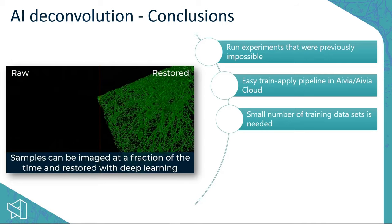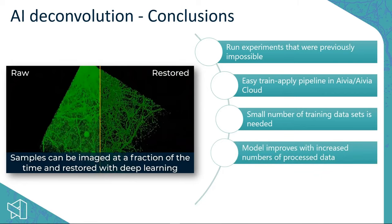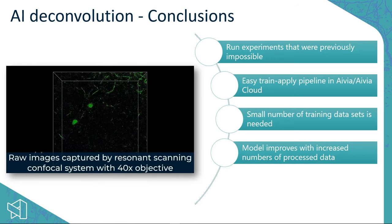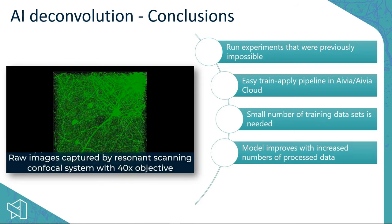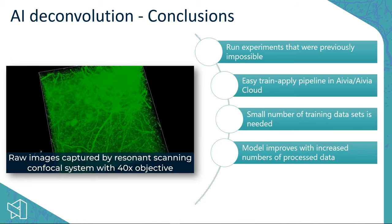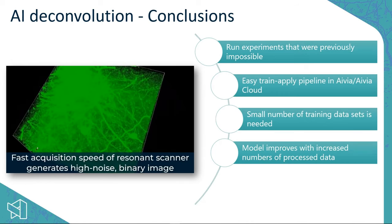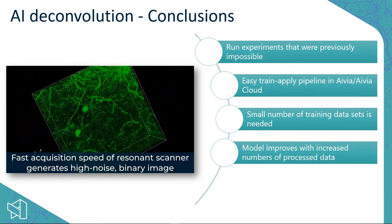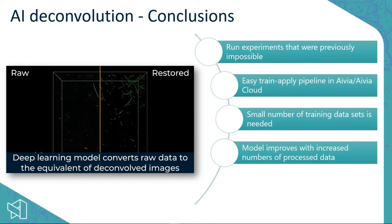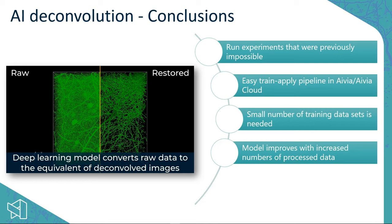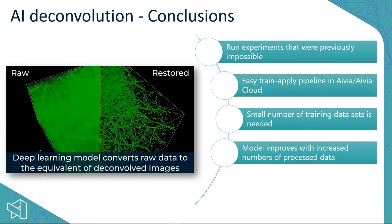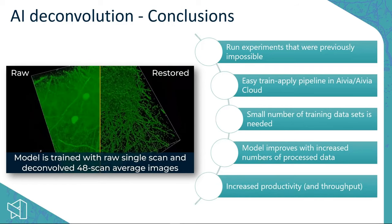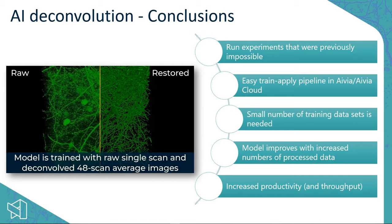Once you have a trained model, you can apply it using a single GPU, very quickly. Importantly, this model can be continuously upgraded with additional training data, so you can gradually make your models more efficient and improve the output quality as you process and acquire more data. Finally — and perhaps most importantly — you can increase the productivity of your research group or core facility.